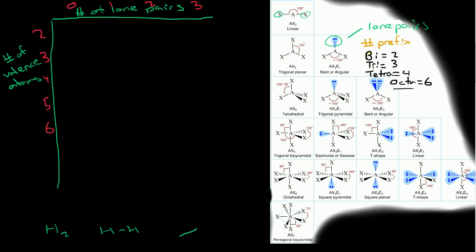As you can see, if we take any number of valence atoms — let's say we have H2O — that would be 2 valence atoms and 1 lone pair. If we look over in this chart, we can see that it would be in one plane, but it would be bent. So with 2 valence atoms and 1 lone pair, this is trigonal planar.